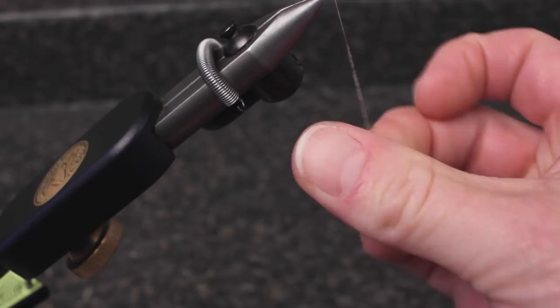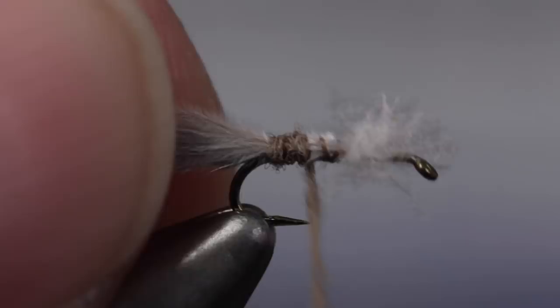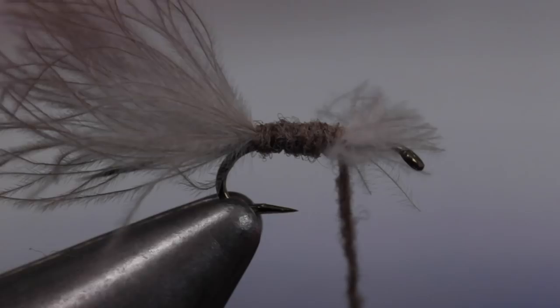Start making touching wraps up the shank to build the body of the fly. When you reach the budding wings, sweep them back and take a few wraps in front. Make an effort to leave some bare hook shank behind the eye.